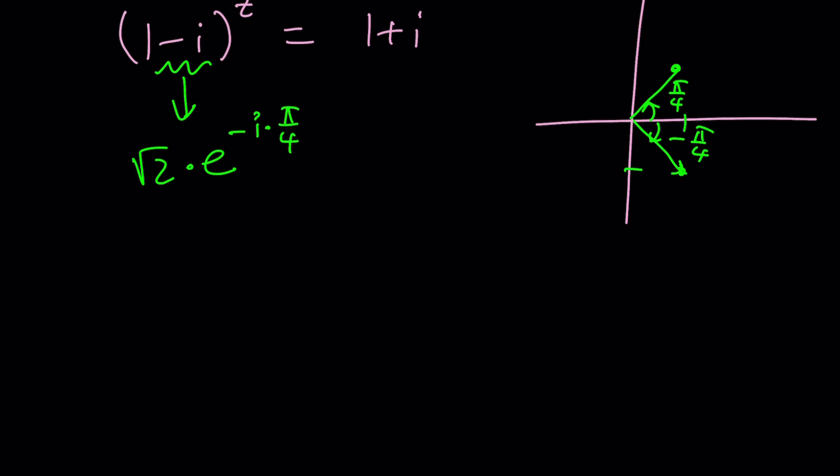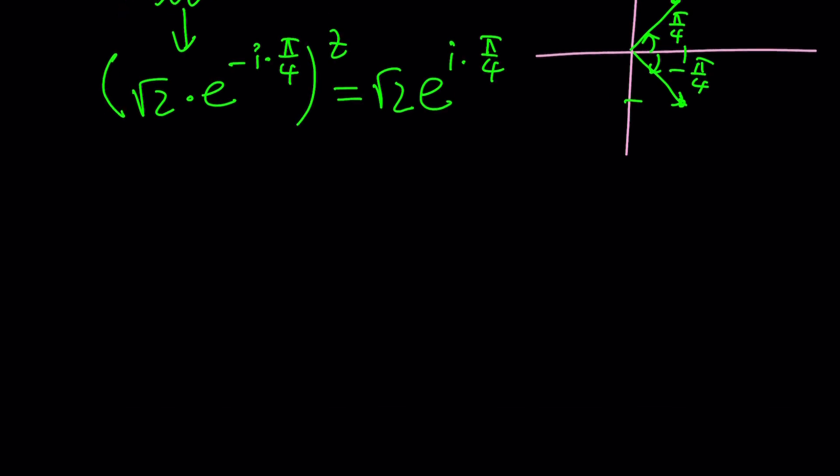What about 1 plus i? We have something similar. It's root 2 again, but this time it's going to be pi over 4. If you just do this, let's just go ahead and take a look at it directly this way, and then we're going to look at other alternatives.